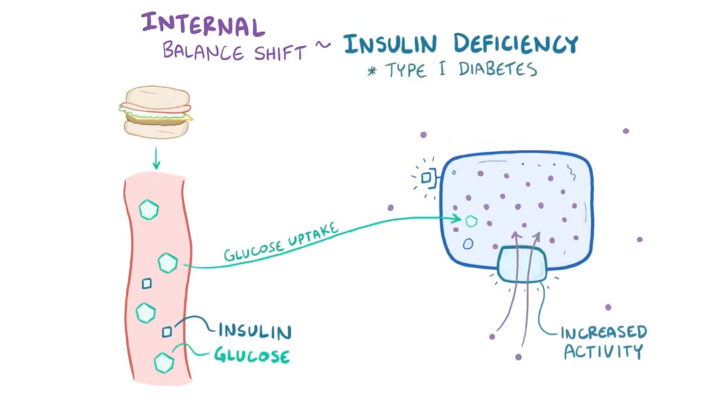People with type 1 diabetes don't make enough insulin, so when they eat a meal, especially a meal with a lot of potassium, that potassium sits in the blood instead of being taken into cells, and this causes hyperkalemia.